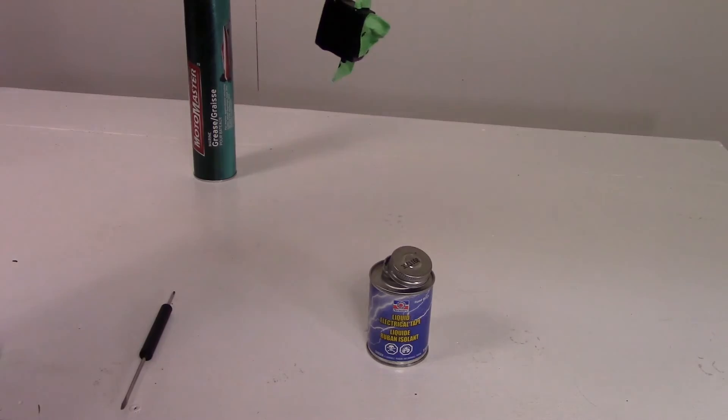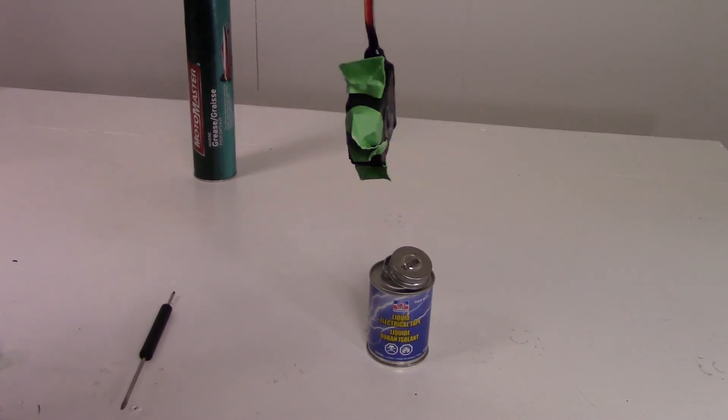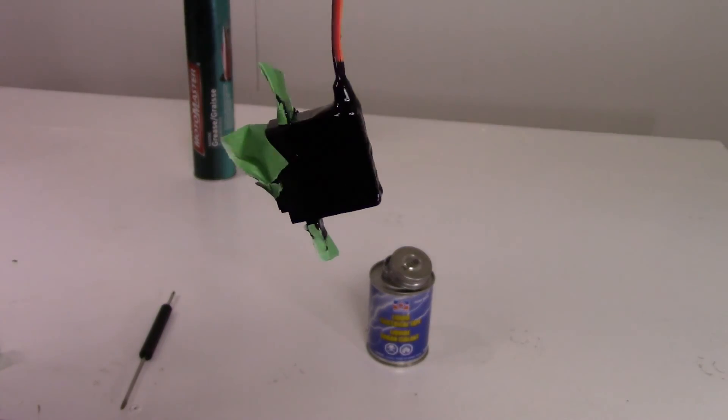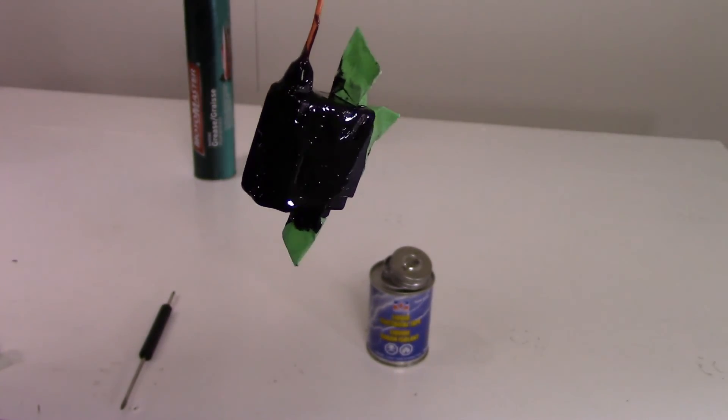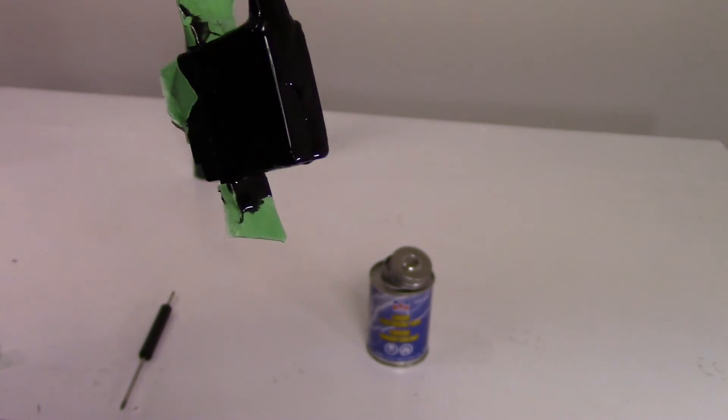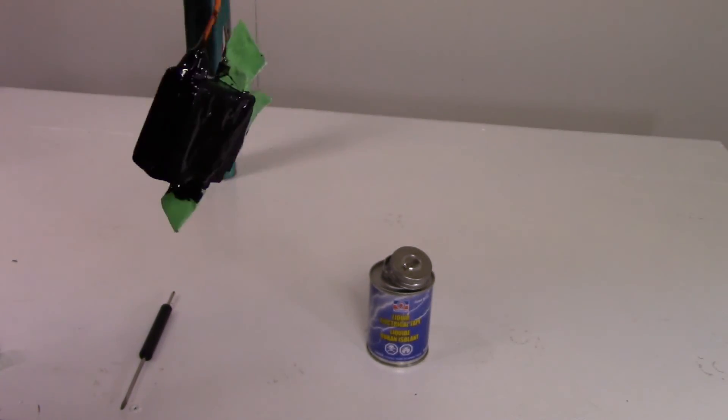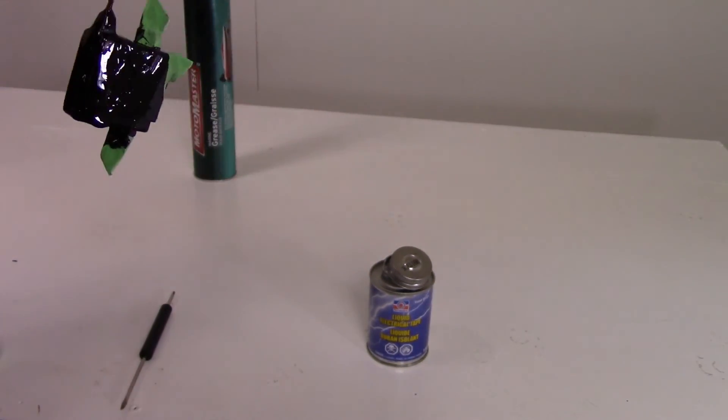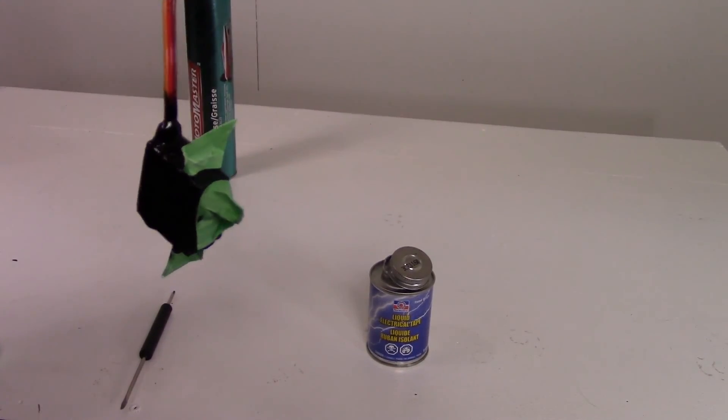There we go. That's how I like to waterproof my servos. As you can see, it's got a nice coat on the outside. It should keep all the water out. But we do have all the electronics on the inside coated too. Well, I hope you guys enjoyed the video. Thanks for watching and I'll see you guys next time. Bye.